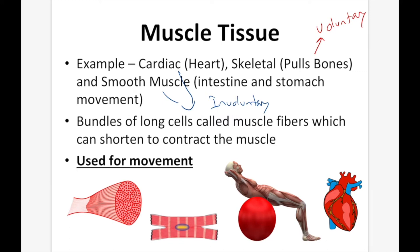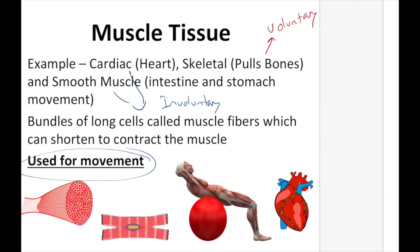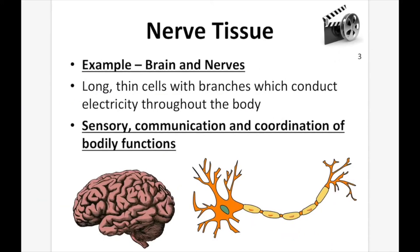Whether you're talking about cardiac, skeletal, or smooth, they're all used for movement. Nerve tissue — for example, brain and nerves. They are long, thin cells with branches which conduct electricity throughout the body. They can be really long — over a meter long, stretching from near your head to near the bottom of your feet. They're responsible for sensory communication and coordination of bodily functions.